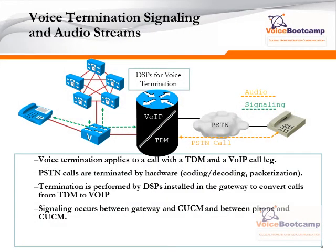In the case of voice termination signaling, when a PSTN call arrives from the PSTN into the router — which is basically known as TDM traffic — it will terminate with one of the DSP chips. PSTN calls will be terminated by the hardware, where the coding, decoding, and packetization will take place.